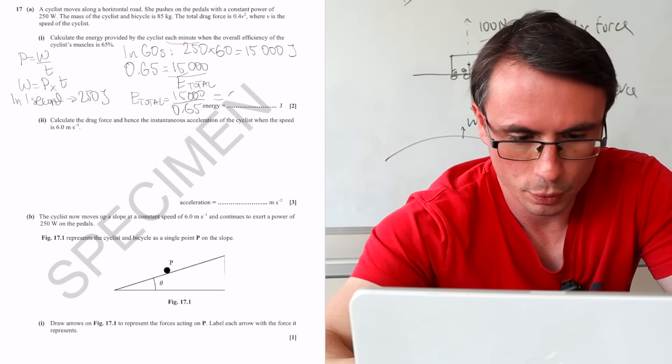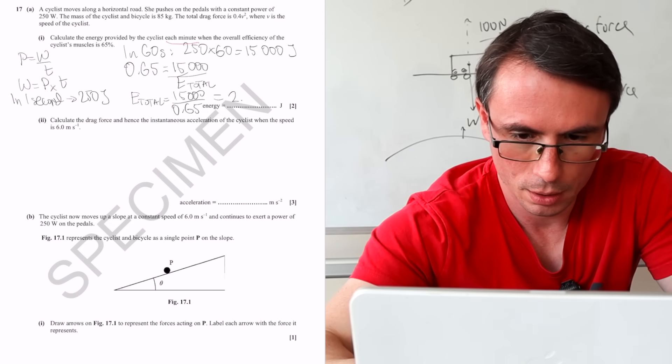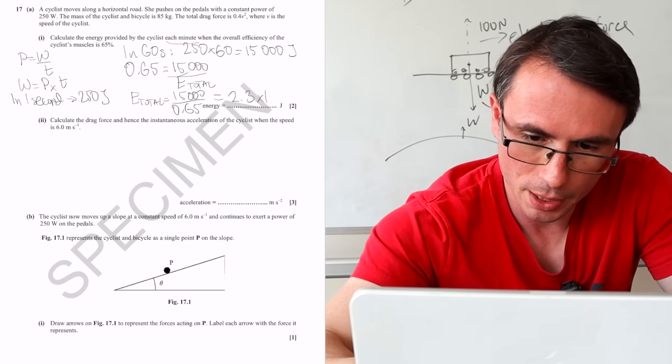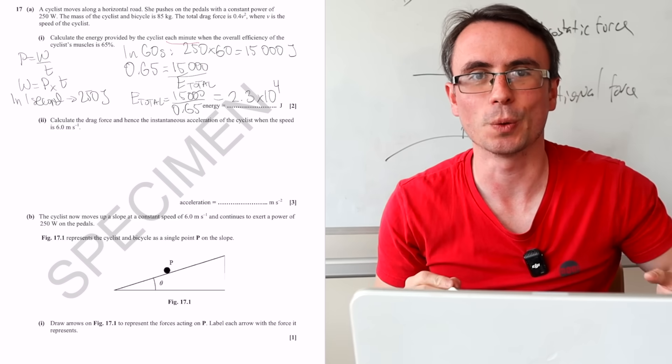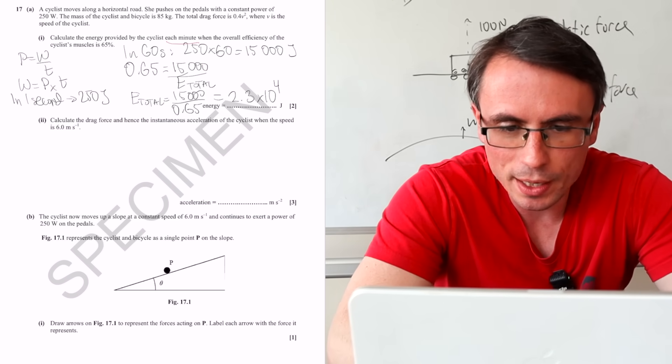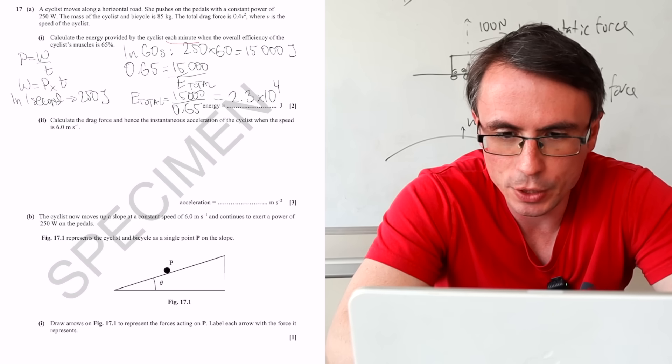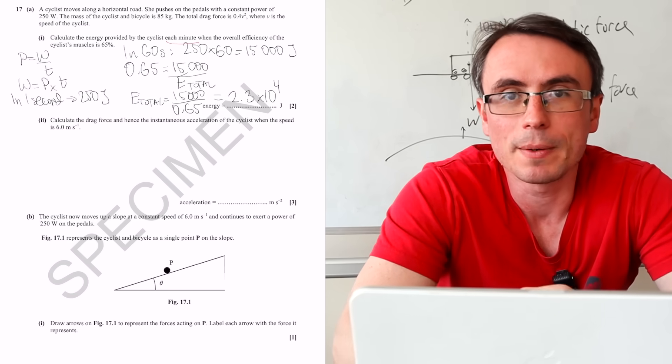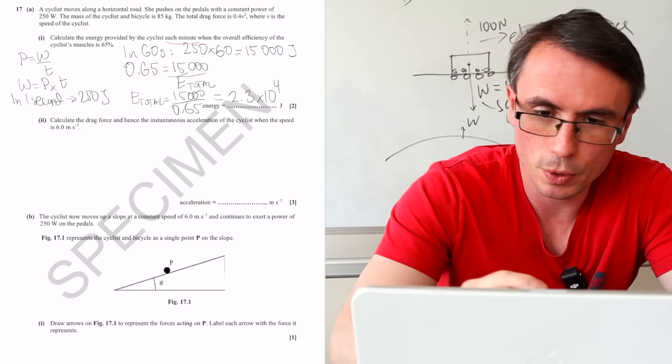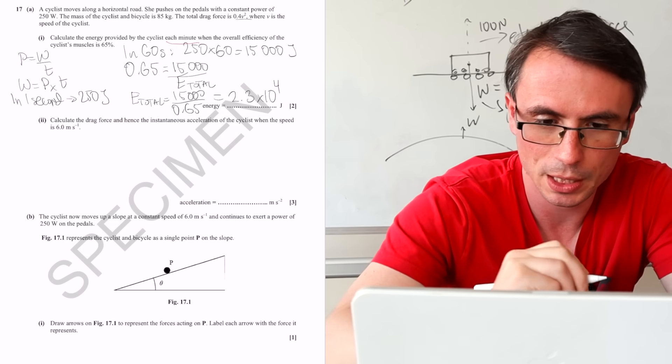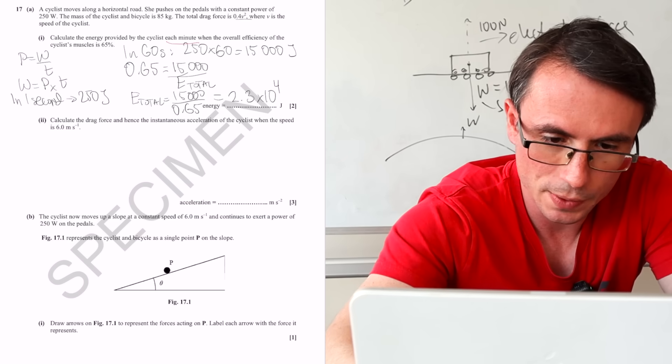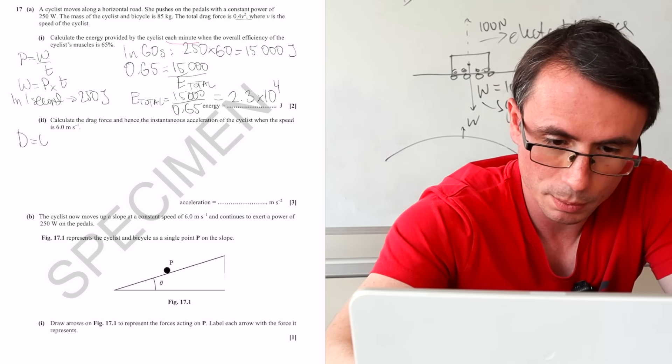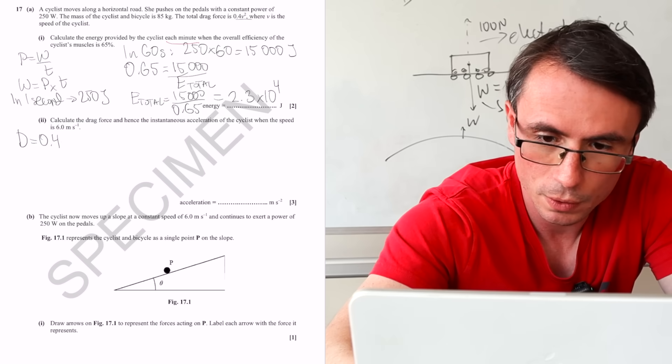Meaning that E total will be 15,000 divided by 0.65, giving us 2.3 times 10 to the power of 4 joules. Next one, calculate the drag force and hence the instantaneous acceleration of the cyclist when the speed is 6 meters per second.